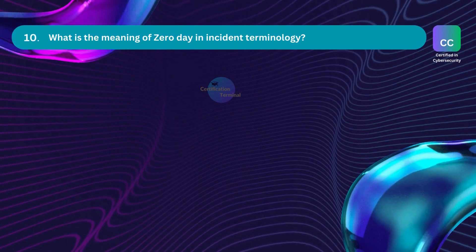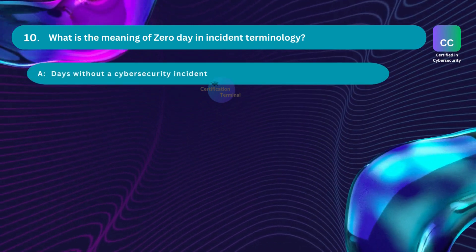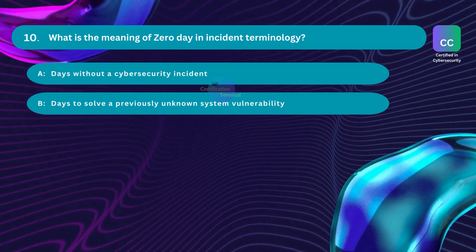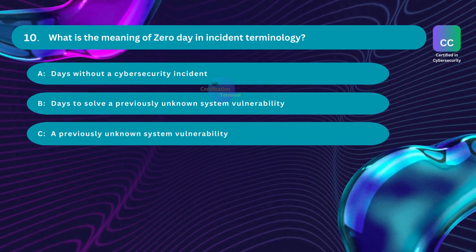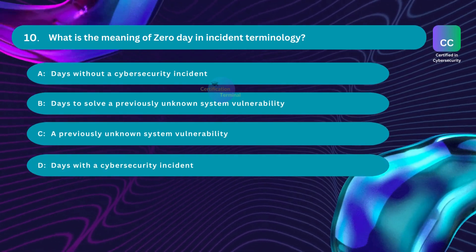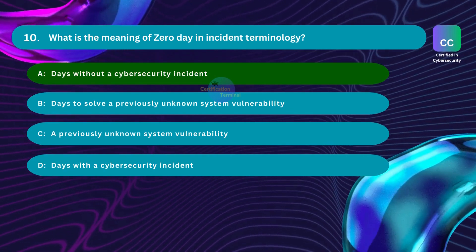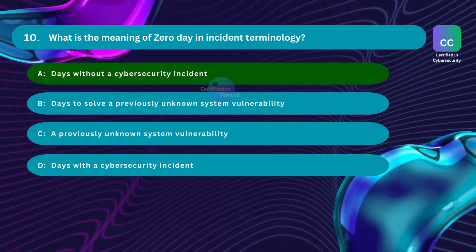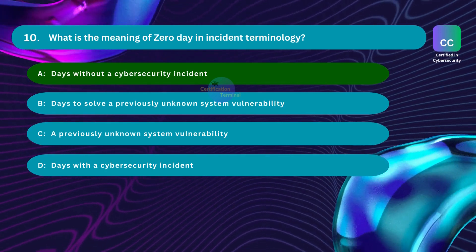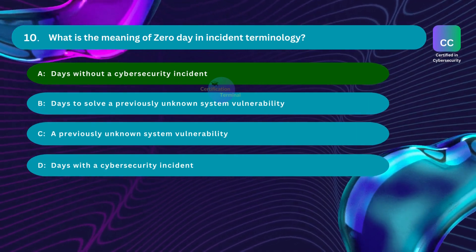Question number 10. What is the meaning of zero day in incident terminology? Option A: days without a cybersecurity incident. Option B: days to solve a previously unknown system vulnerability. Option C: a previously unknown system vulnerability. Option D: days with a cybersecurity incident. The correct answer is Option C, a previously unknown system vulnerability. A zero day is an unknown system vulnerability that can be exploited since it does not yet exist in any vulnerability database. These vulnerabilities do not generally fit recognized patterns, signatures, or methods, making them very hard to detect and prevent.